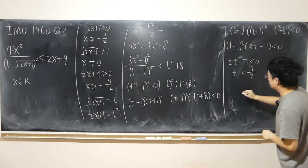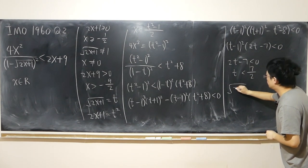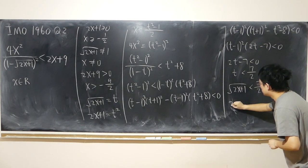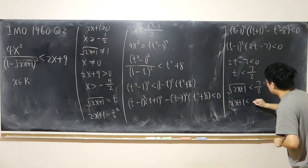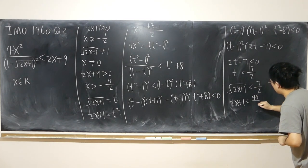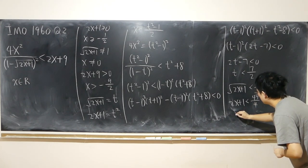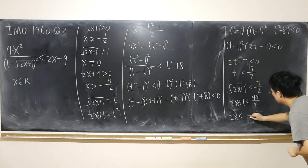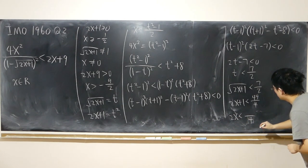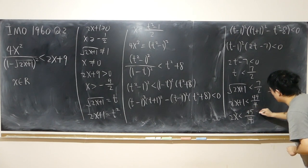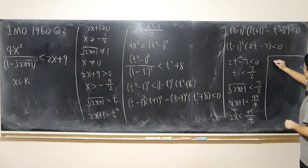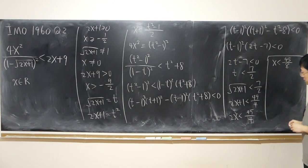So substitute back. t is square root of 2x plus 1 less than that. So 2x plus 1 less than 49 over 4. And 2x less than 45 over 4. And so x less than 45 over 8.